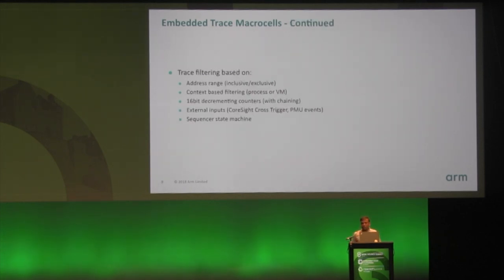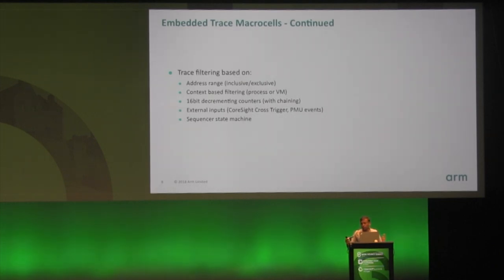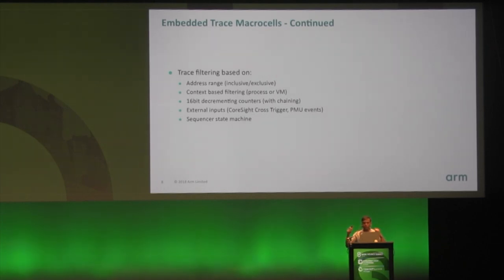Like any other tracing subsystem, you can filter the amount of trace generated. There are address range comparators — you can specify a start address and an end address and trace only within that window. You can also trace based on process context ID using the context IDR, or trace a particular VM based on VM ID. There are many other resources like counters and state machines that you can program, and you can combine these resources to create complicated scenarios for how you want to trace.